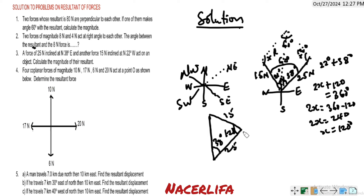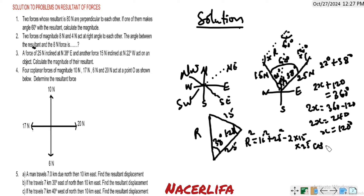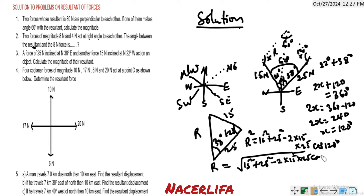If you are not familiar with the cosine rule, you can go back to your maths. Using the cosine rule, labeling the resultant R: R² = 15² + 25² − 2 × 15 × 25 × cos 120°.